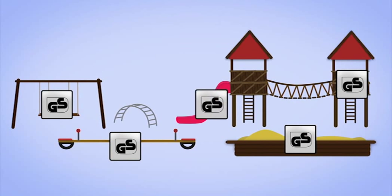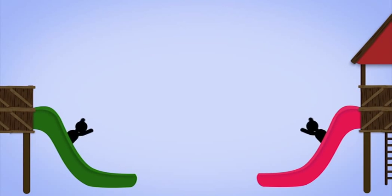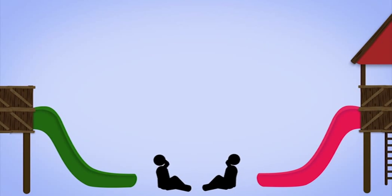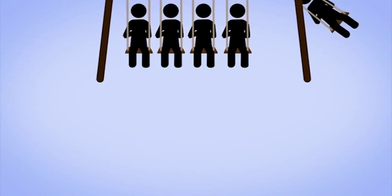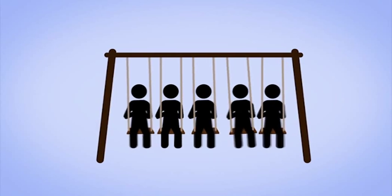Seals of quality tell you that experts have tested the equipment. The various pieces of equipment should be far enough apart to prevent children from bumping into one another while playing. This is especially crucial for swing sets.